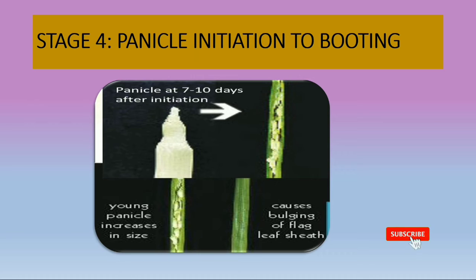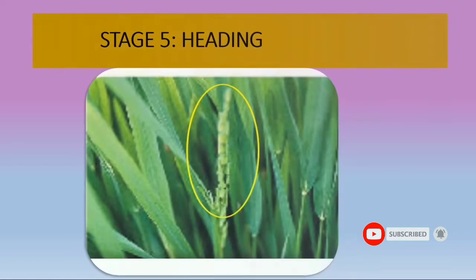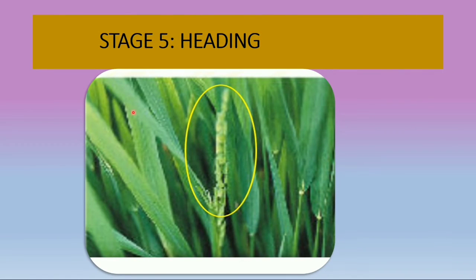Coming to the heading stage: the head of the grain shows up and 50% of the panicles have been exerted. It usually takes 10 to 14 days for all plants to complete the heading stage.